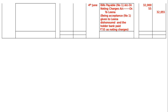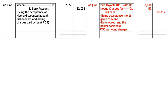The second bill was due after one month on 4th June — it is dishonored. On 4th June, in the books of Mina: bills payable number one account debited Rs. 32,000, noting charges account debited Rs. 55, to Lina Rs. 32,055. Being acceptance number one given to Lina, dishonored and the holder bank paid Rs. 55 as noting charges. Lina debited Rs. 32,055 to bank account Rs. 32,055. Being the acceptance of Mina discounted at bank, dishonored and noting charges paid by bank Rs. 55. Total is Rs. 2,32,055 both in debit and credit columns — this is the final answer.